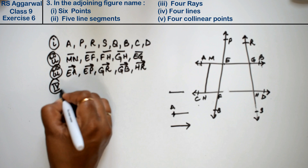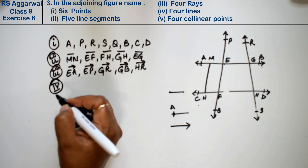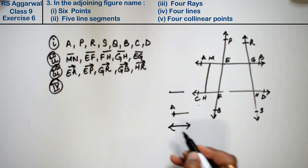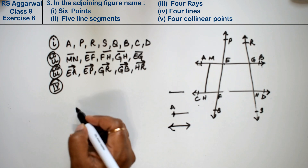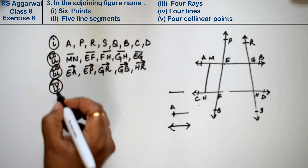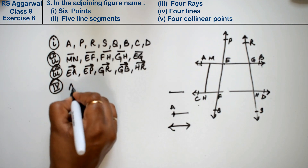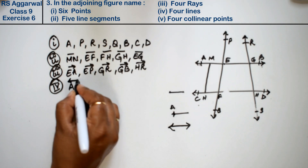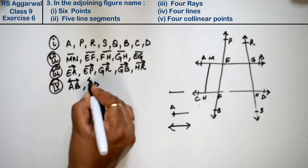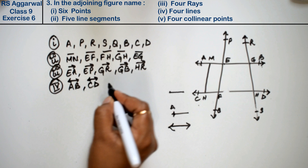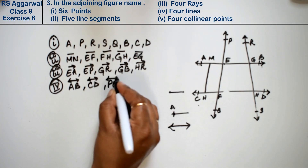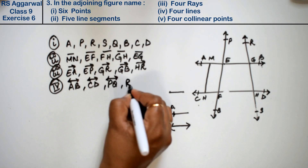Let's do the fourth part: 4 lines. Lines extend infinitely in both directions, so they have arrows on both sides. The four lines are: AB, CD, PQ, and RS.